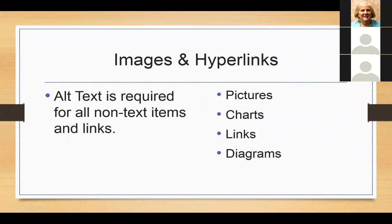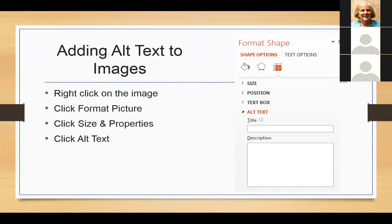As always, any pictures, charts, links, and diagrams all require alt text. If you right-click on any of those objects, when you right-click on an image it's usually Format Picture or Format Object — go into Size and Properties and you have the option for alt text. I recommend putting in a title for the actual image and then a description, especially for something like a graph, so you can describe what that graph is showing to students. If you use a lot of images just for enhancement of the slide, that's not recommended — use something that really means something to that particular slide.